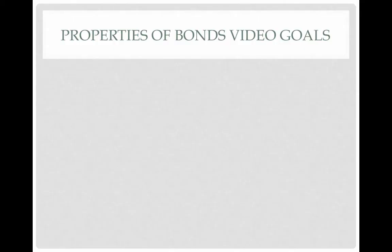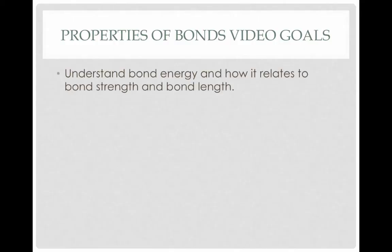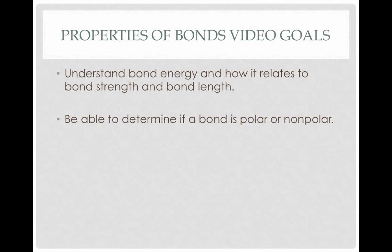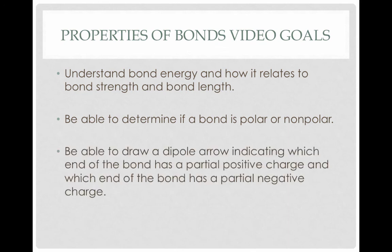That brings us to the end of this video. We looked at bond energy and how it relates to bond strength and bond length, and we saw that triple bonds are shorter and stronger than single and double bonds. We looked at bond polarity and determined if a bond is polar or nonpolar based on electronegativity differences. Then we looked at how to draw dipole arrows indicating which end of a bond is partially positive and which end is partially negative.